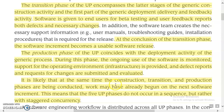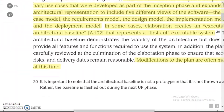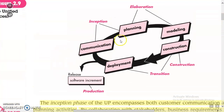It is likely that at the same time, the construction, transition, and production phases are being conducted concurrently, and work may have already begun on the next software increment. The phases include: Elaboration with communication and modeling, Construction with testing, Transition with beta use and assessment, and Production where the final increment is produced with customization, feedback collection, and the final software release.